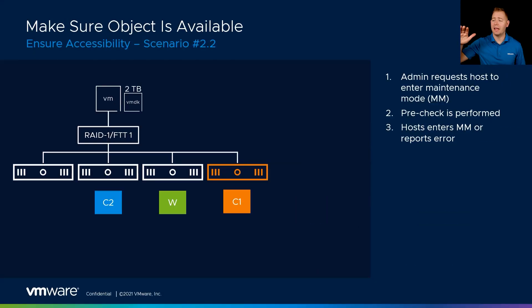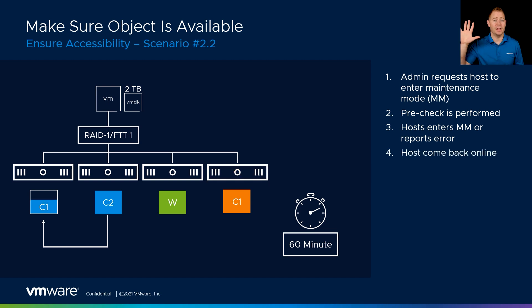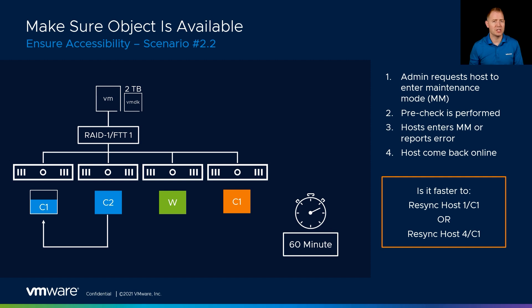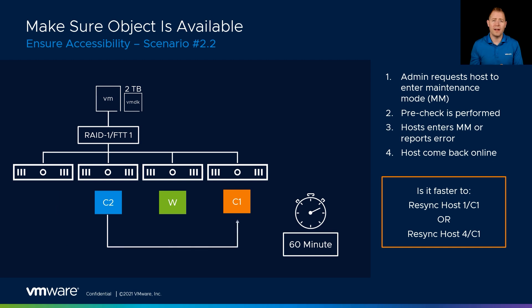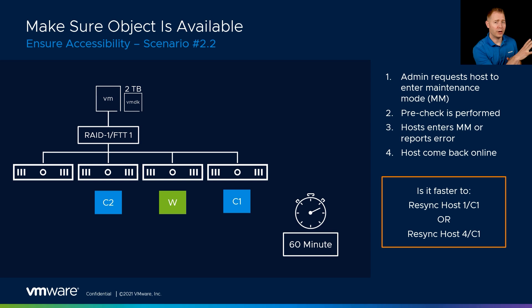Let's take this example a bit further. We have host four in maintenance mode and the 60-minute timer lapses — vSAN triggers a re-sync and starts copying data over to host one. But at the 65-minute mark, host four comes back online. vSAN now has a decision point: is it faster to re-sync two terabytes of data to host one, or to catch up the 10 gigs of data that component one on host four missed? vSAN would determine it's much faster to update 10 gigs versus re-syncing two terabytes, so it would delete the component on host one and catch up the component on host four.